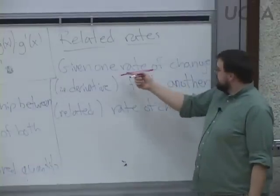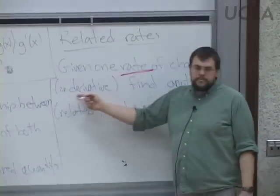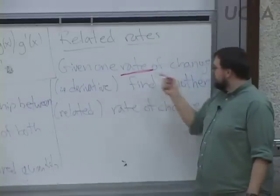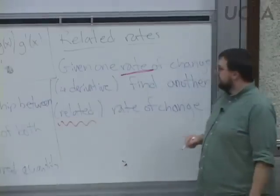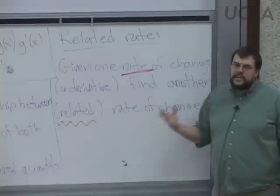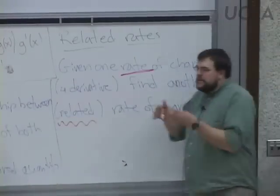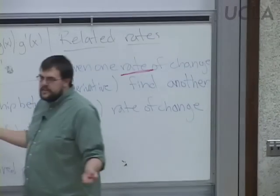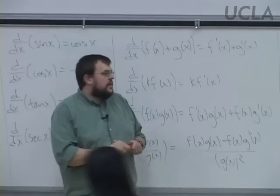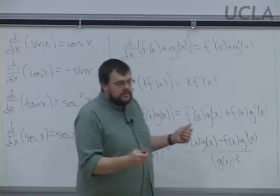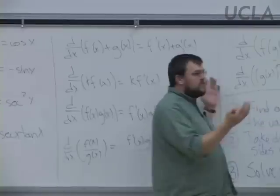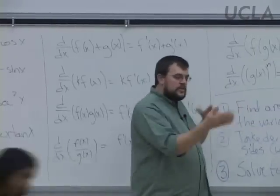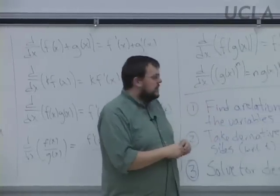Rate of change is a key word telling us we have something to do with the derivative. So we're given a rate of change or a derivative, and we want to find another, hopefully related, rate of change or derivative. It has to be related — maybe it's a circle and you're asked how the area is changing with the radius. As one is changing, the other is changing, and we should be able to say something about how the rates relate to one another.